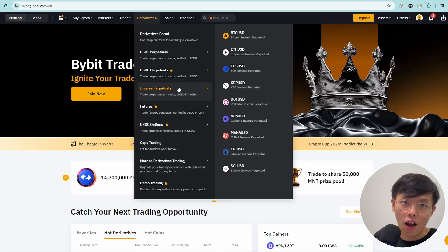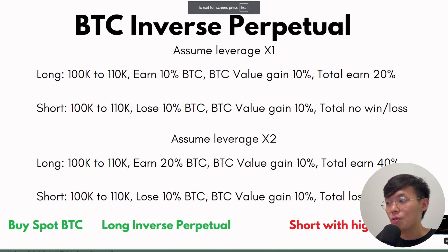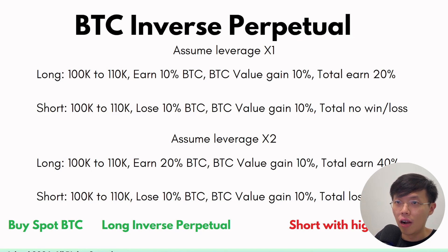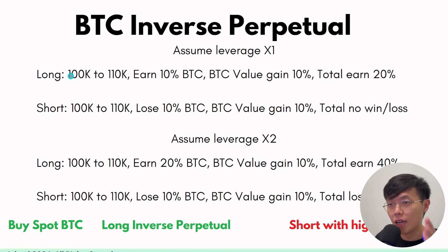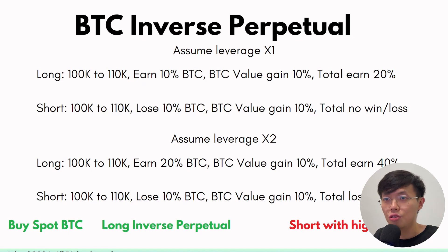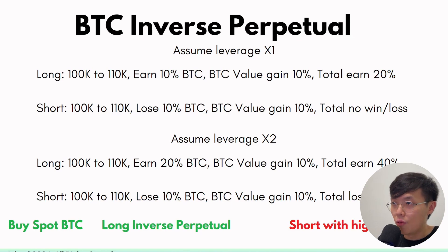For example, if you were to trade BTC inverse perpetual using BTC, and you want to long — the price now at 100K — and then the price moves from 100K to 110K, you earn 10% of BTC in the perpetual contracts. Then the market of BTC also gained 10% in value, so the BTC coin you used to trade also gained in value. In total, you gain 20% of your earnings.